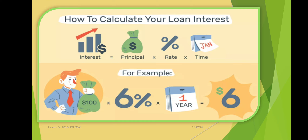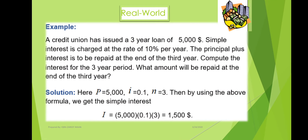Interest is equal to the product of three terms: principal, rate per time, and time. For example, if we consider a hundred dollars as principal, a six percent interest rate, and a time duration of one year, we get six dollars interest. This is because six percent equals 0.06, multiplied by one year, giving us six dollars.